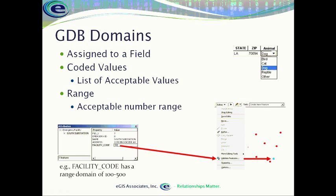Domains consist of two types: a coded values domain and a range domain. This helps ensure that the attribute values entered into our attributes are clean and valid. The coded values domain is literally a list, so when we go to edit a field that has a coded values domain assigned to it, we get a dropdown. Only the values listed can be selected. This helps reduce typos and keeps our data normalized so that when we do queries, we're not guessing how many different ways somebody may have spelled bird, cat, dog, or reptile, as the example here shows.